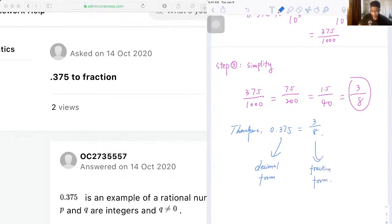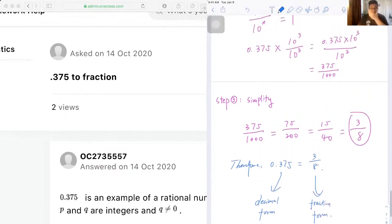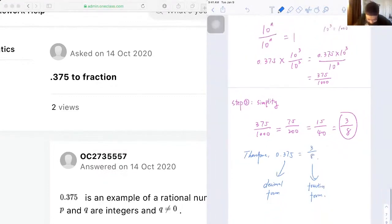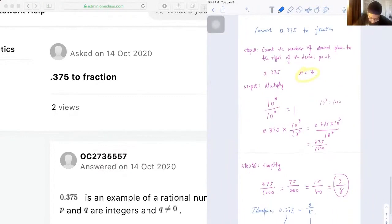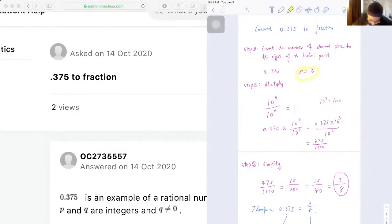Okay, so let's just review the step of solving this type of question. So first we need to count the number of decimal places to the right of the decimal point to determine whatever n is.